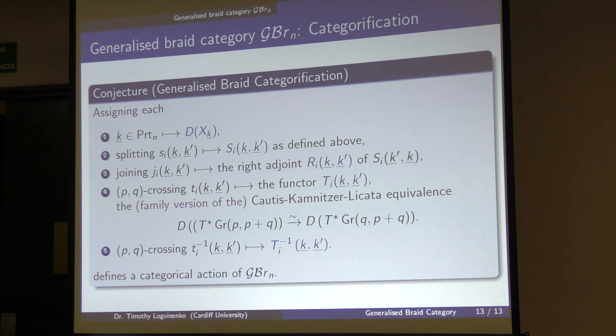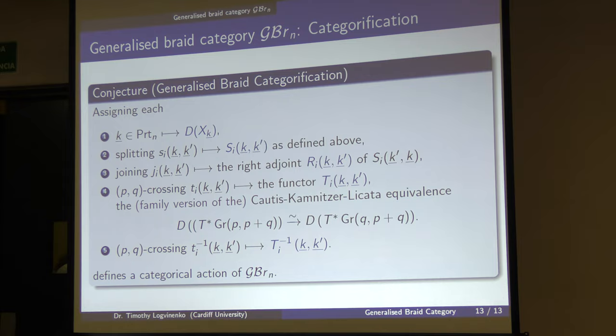Any questions? Does the action give an action on the DG pre-triangulated category? Good question. Some years ago I would have said immediately yes, because all the constructions work via DG enhancements. All these twists are constructed essentially by twisted complexes in DG enhancements.